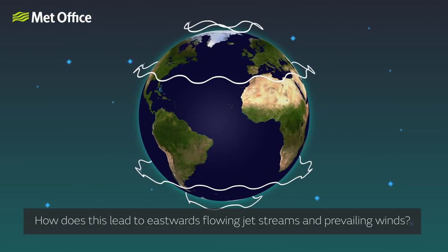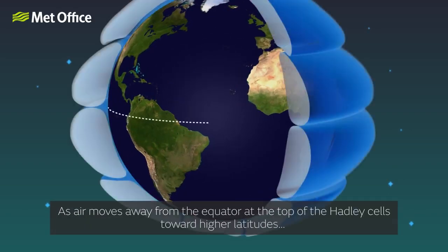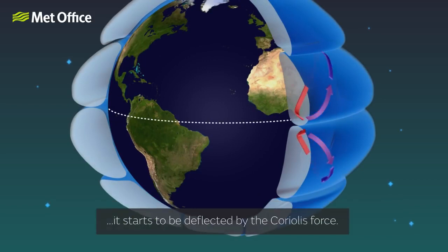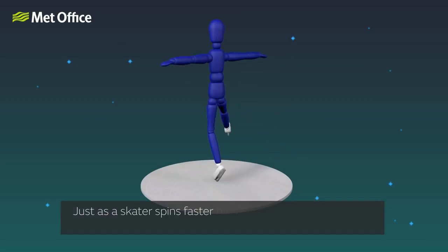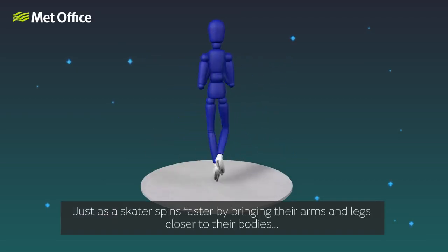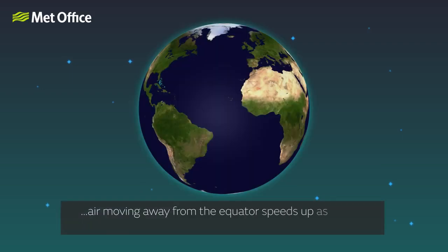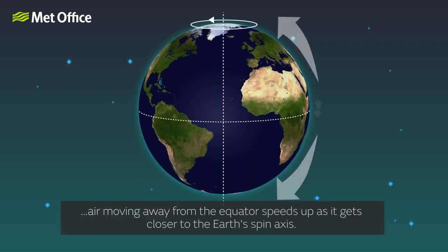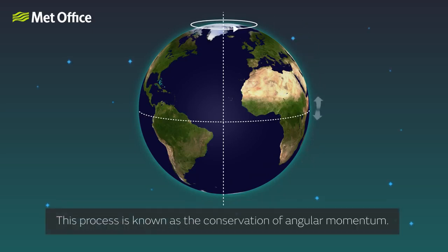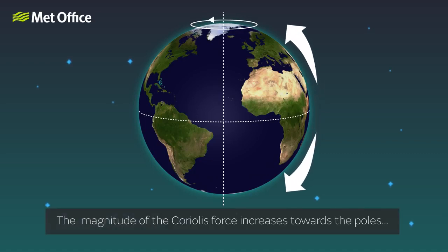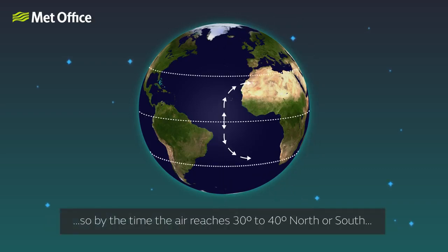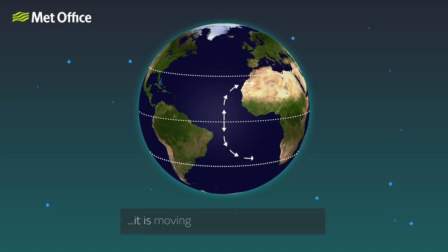How does this lead to eastward-flowing jet streams and prevailing winds? As air moves away from the equator at the top of the Hadley cells towards higher latitudes, it starts to be deflected by the Coriolis force. Just as a skater spins faster by bringing their arms and legs closer to their bodies, air moving away from the equator speeds up as it gets closer to the earth's spin axis. This process is known as the conservation of angular momentum. The magnitude of the Coriolis force increases towards the poles, so by the time the air reaches 30 to 40 degrees north or south, it is moving in an eastward direction.